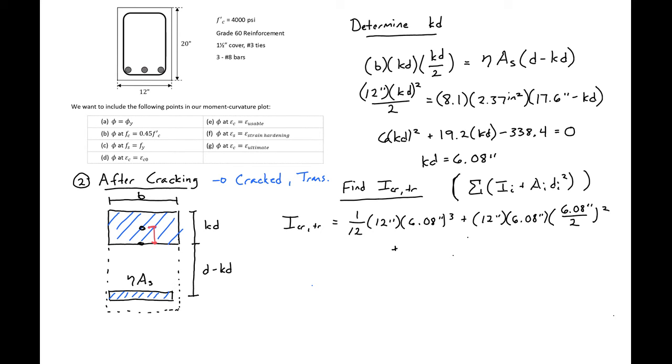Now we need our steel component. Our steel will have 8.1 as our n times our area, 2.37 square inches, times our distance, 17.6 minus 6.08, and this squared. We can then find our I cracked transformed to be equal to 3,460 inches to the fourth.